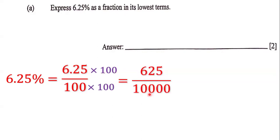Now we can simplify this fraction. Let's use 25 to simplify it because 25 can go into 625 and 25 can go into 10,000. 625 divided by 25 is 25, and 10,000 divided by 25 is 400.